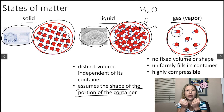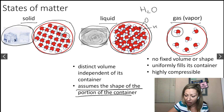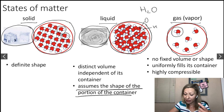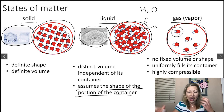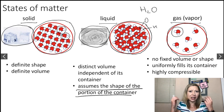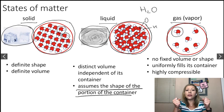How about solids? Solid water molecules in ice are very, very close to each other. They are still moving, but to a very, very small extent. In the case of solids, we are going to have a definite shape and a definite volume.